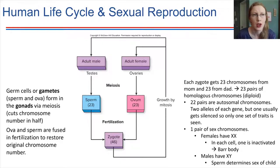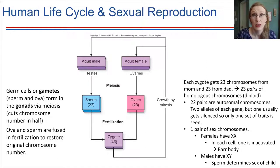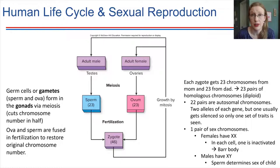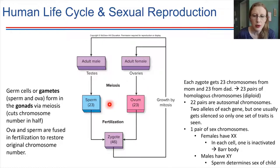We start with a cell that has 46 chromosomes — 23 unique chromosomes, but with a copy from mom and a copy from dad. Take that cell through meiosis and you end up with a cell that has half the number of chromosomes. So sperm or eggs are going to have a total of 23 chromosomes, just one copy of each. Meiosis is what produces the sperm and the egg, also called the ovum — that's the same thing, just an egg cell — and these are produced in the gonads.